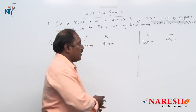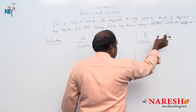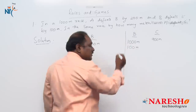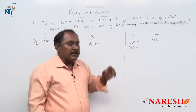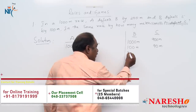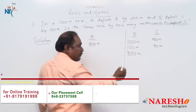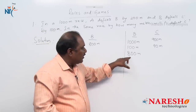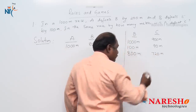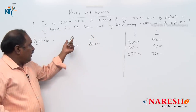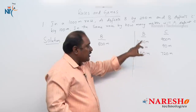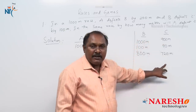Let us make B equal. We know that if B runs 1000 meters, in the same time C will run 900 meters. So if B runs 100 meters, C will run 90 meters. Now if B runs 800 meters, 100 and 800 are 8 times, so 90 into 8 is 720 meters. If A runs 1000 meters, in the same time B runs 800 meters, and if B runs 800 meters, in the same time C will run 720 meters.